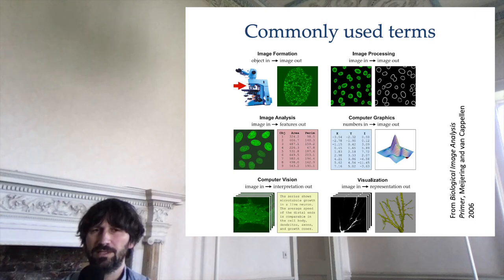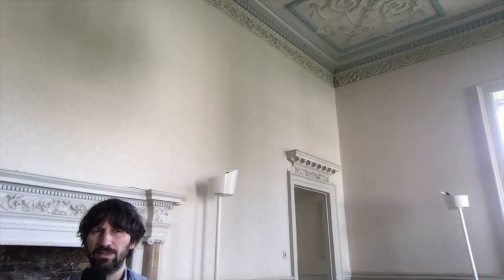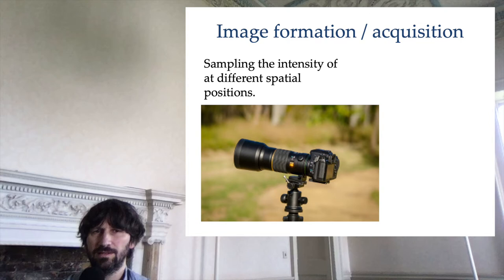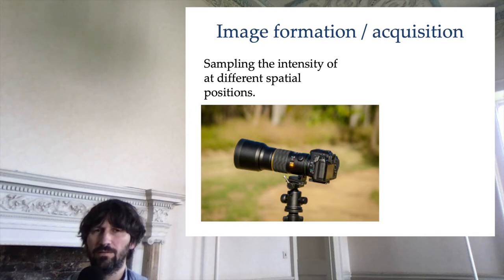Before you can have a digital image, you need to produce it. This is the step that is called image acquisition, or digitization, or image formation. This is when you go from a real world object to an image. An image is just an estimated sample of some properties of the world object — typically of the luminosity of the object at any point in space and in time.